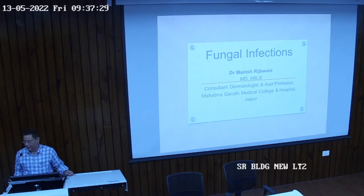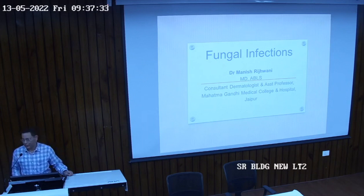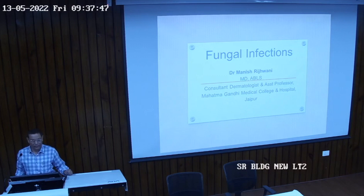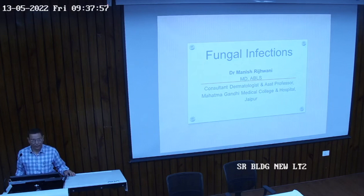Our major exposure to the sun is over the scalp. Hair keeps the scalp protected so there is no direct sunlight on it. Without hair, there are many problems from photo exposure. Certain tumors are also found over the scalp. Skin protects us from various tumors. Melanin especially — we are protected from many skin cancers by melanin.